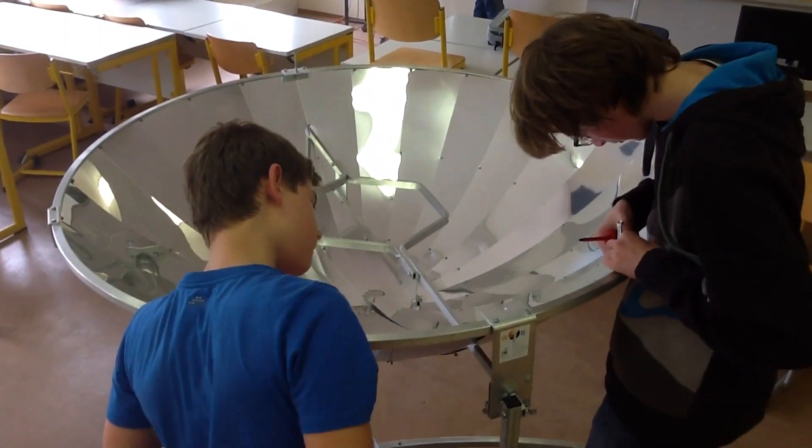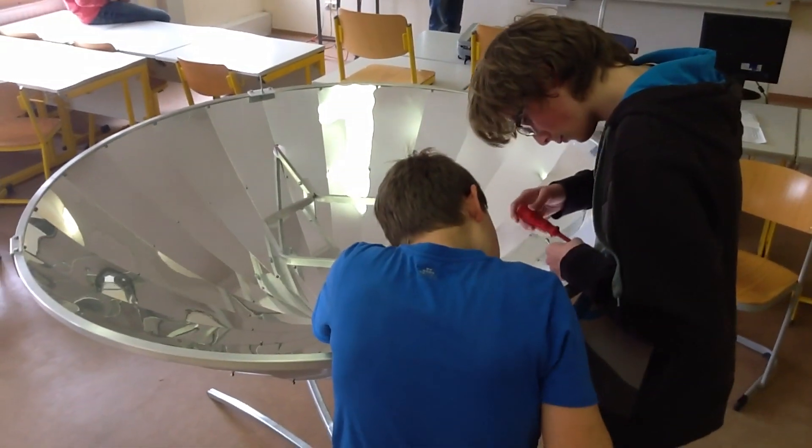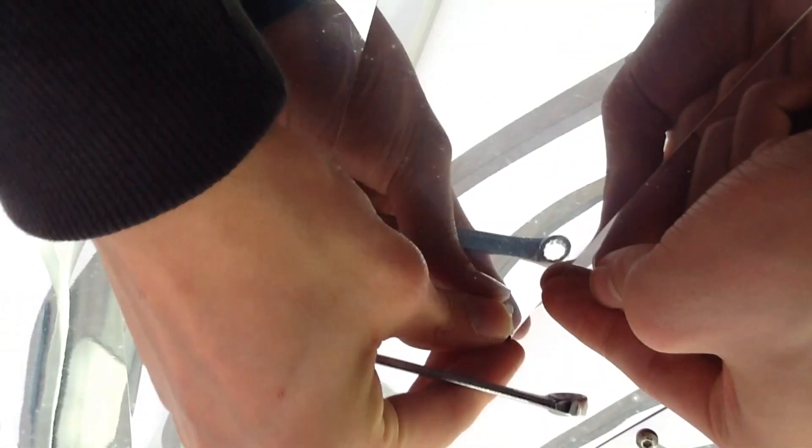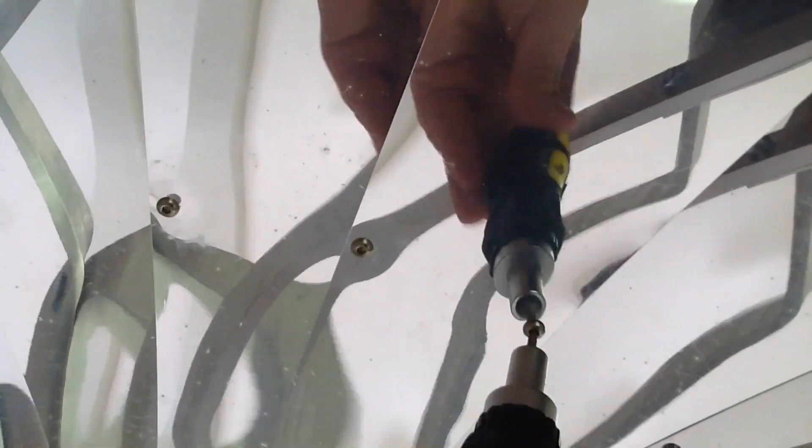However, you can use regular aluminum foil and your cooker will be considerably less expensive. Believe it or not, all you need is a screwdriver and a wrench.